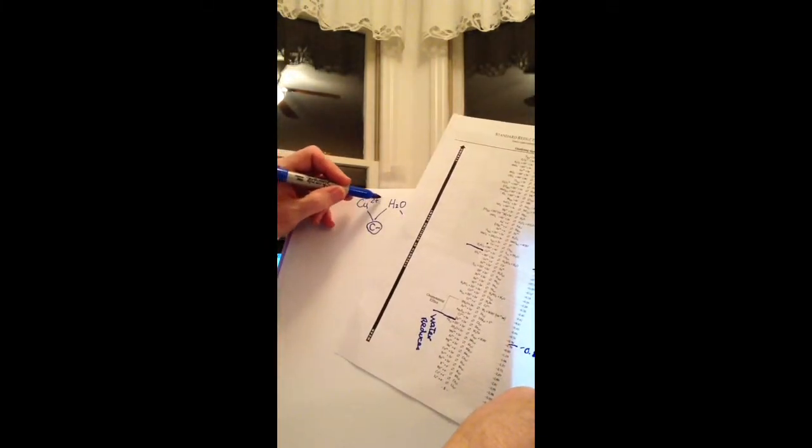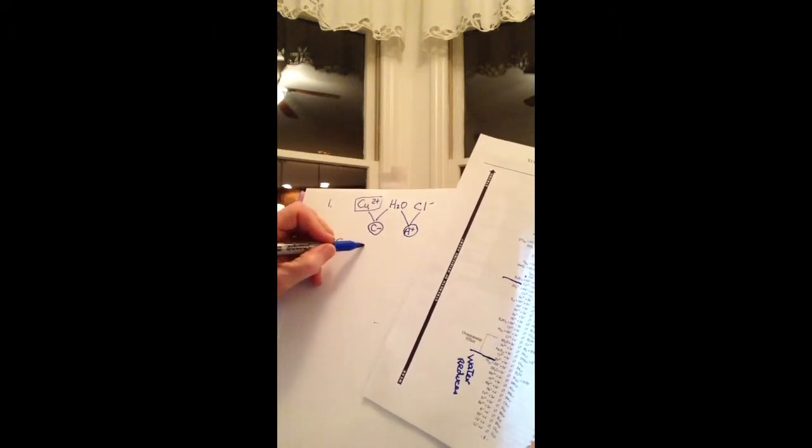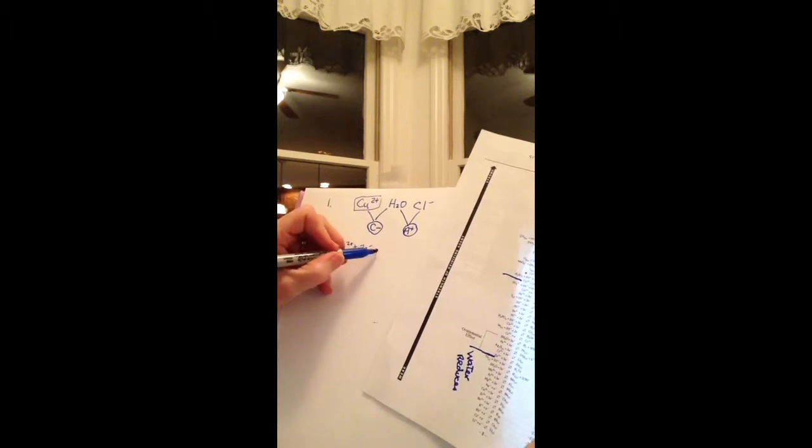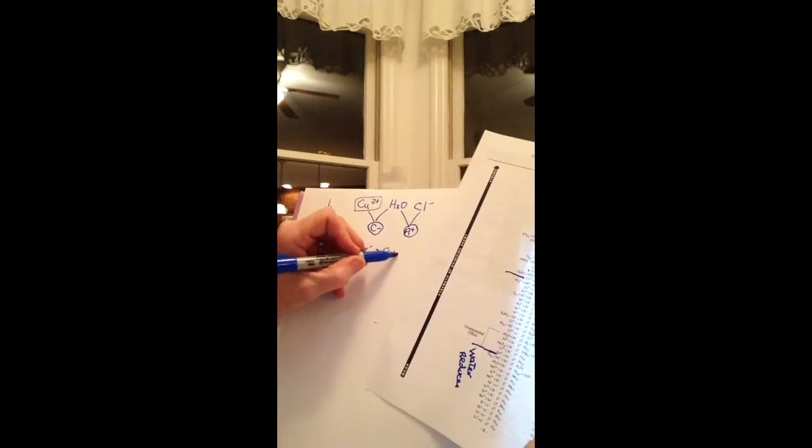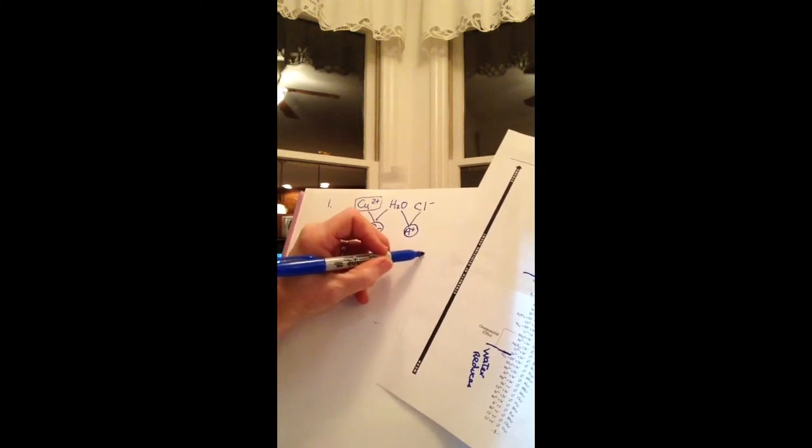Well, that would be the copper. So that says that this is going to be responsible for the reduction half-reaction. So what do we do? We write that down. We write Cu2+ plus 2e- yields Cu, and the value is plus 0.34.